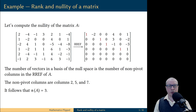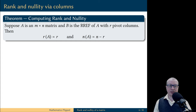Let's record these observations. Suppose we have a matrix A of size M by N, and we have reduced row echelon form B of A with R pivot columns. Then the rank of A is equal to R, the number of pivot columns, and the nullity of A is equal to N minus R.